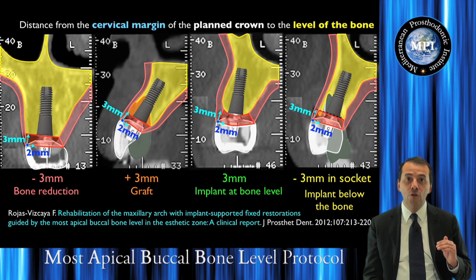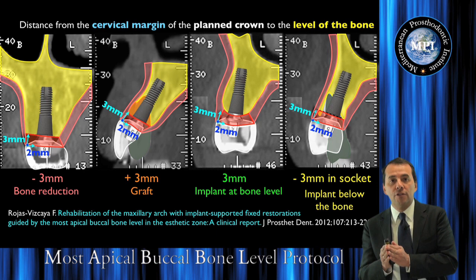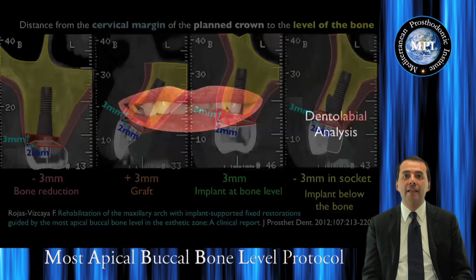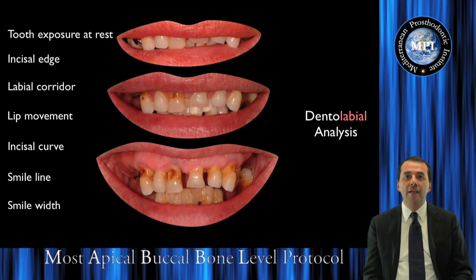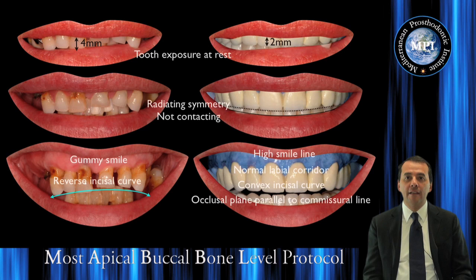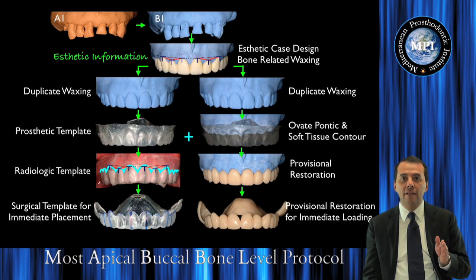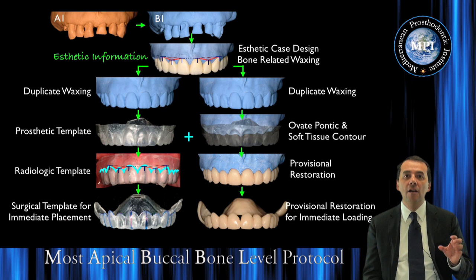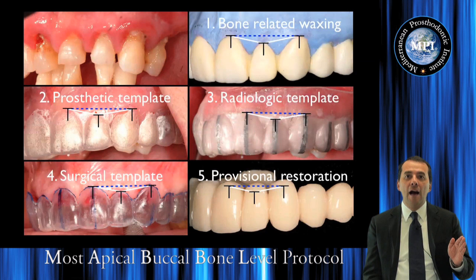After we make this analysis, we will know what we need to do with the existing bone of the patient in order to obtain the restoration we are planning, because the bone most of the time is not at the same level. The distance between the margin of the crown we are planning could be different for a molar, for a premolar, for a canine, for a lateral, for a central. So this presentation is about making this analysis, planning the case, and showing our patient the potential treatment plan we are designing.